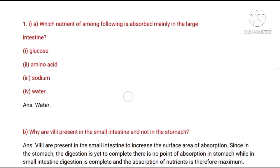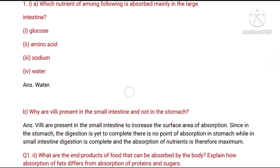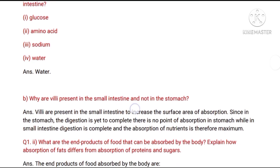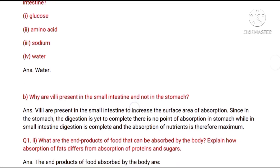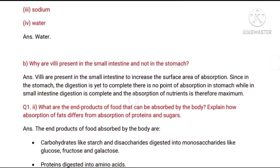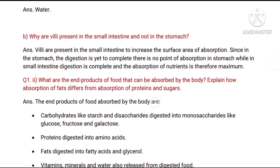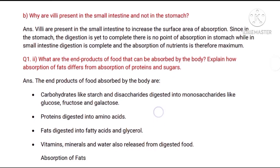Q1 B. Why are villi present in the small intestine and not in the stomach? Q1 C. What are the end products of food that can be absorbed by the body? Explain how absorption of fat differs from absorption of protein and sugars.